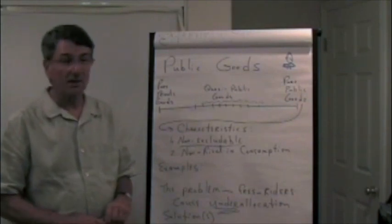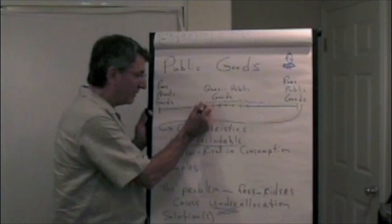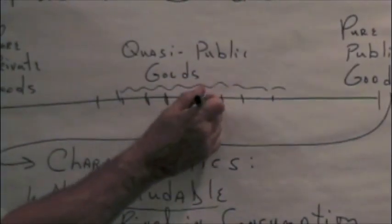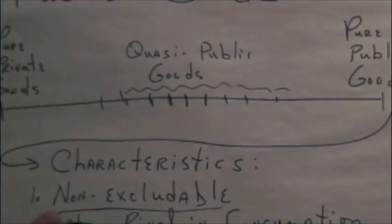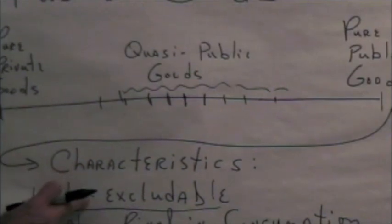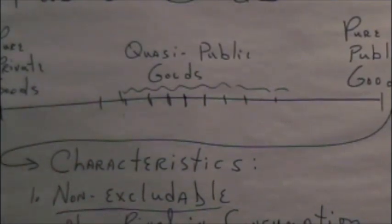Anyway, just as a side note, libraries, parks, fire departments, police departments, etc. are quasi-public goods. They are not pure public goods because they can be excluded and oftentimes they're rivaling in consumption.